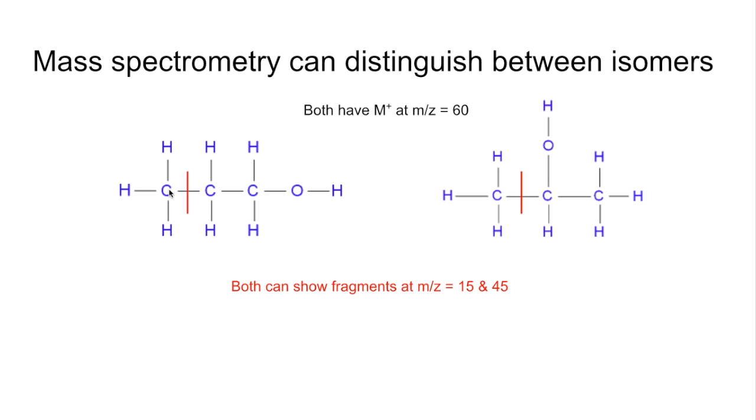So they can both generate a CH3 fragment. And the 45s, slightly different formulae, but they've both got two carbons, five hydrogens and an oxygen.